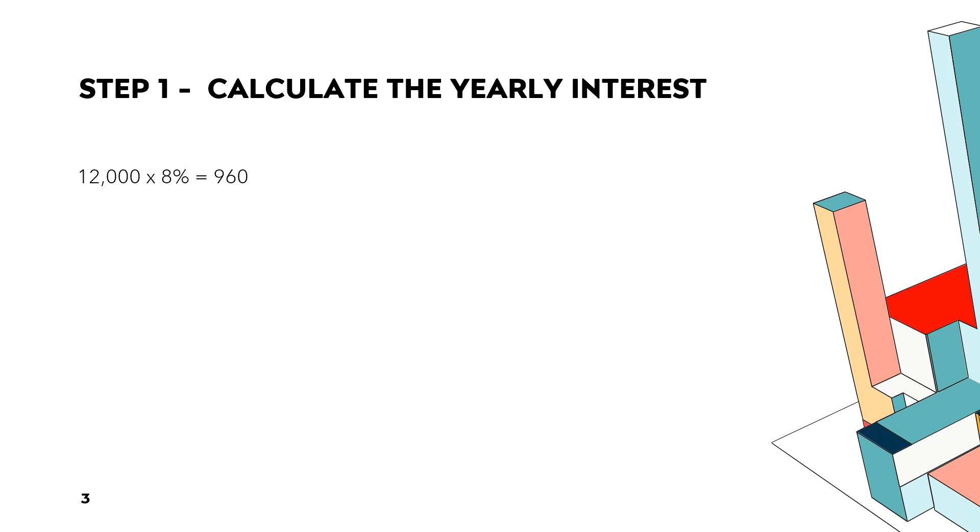Okay. So, step one, we want to calculate the yearly interest. So, it was $12,000 at 8%. So, it was $960. If this was simple interest and you had the loan for a year, the interest would be $960.